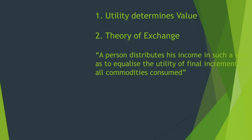Cost becomes an element of value only when supply is variable. If supply is fixed, subjective considerations — that is, utility and pleasure and pain — determine value. By stating thus, Jevons made utility the determinant of value.